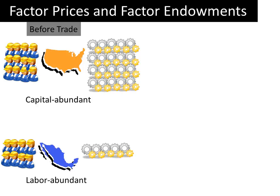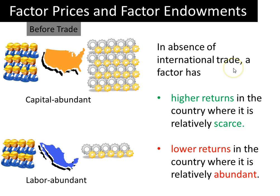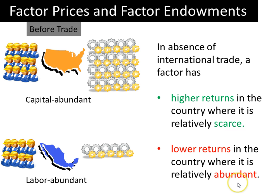Now the question is, how are factor prices — that is, wages for labor and real interest payments for capital — going to be different in the two countries? In deciding that, we should keep the following economic rule of thumb in mind. When there is no international trade, a factor such as labor or capital has higher returns in the country where it is relatively scarce. Recall from Econ 101 that the market rewards scarcity. When something is scarce in relation to how much it is demanded, then it fetches a higher price. That's the reason why diamonds fetch a higher price than sand — diamonds are scarce while sand is abundant. Similarly, a factor of production has lower returns in the country where it is relatively abundant. When you have a lot of something, then it's not very handsomely rewarded.